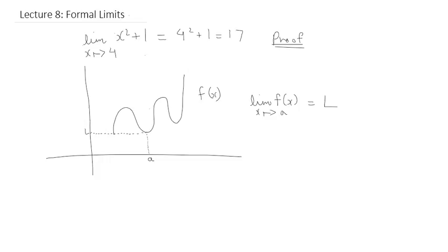Let's try to understand this in a different way. I'm going to draw an open interval around a. An open interval is basically an interval around a that does not include the outer boundaries. The length on each side is equal to delta, so this interval runs from a minus delta to a plus delta.